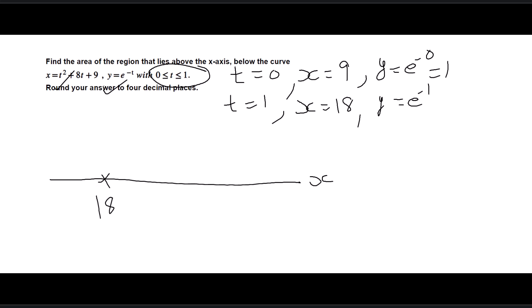When t equals 1, x will be 18, and y will be e to the negative 1. So we have the point (9, 1) and here we have (18, e^-1) as corresponding points. This is the area that we have to find above the x-axis and under this graph.